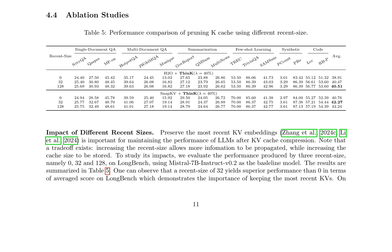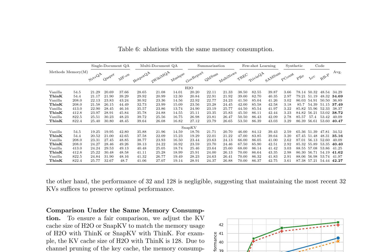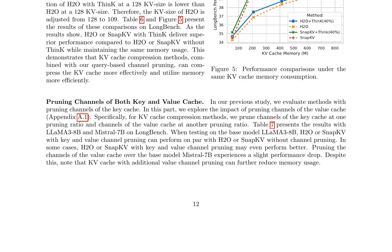The performance of THINK is compared to H2O and SnapKV under the same memory consumption. H2O or SnapKV with THINK deliver superior performance compared to H2O or SnapKV without THINK while maintaining the same memory usage, demonstrating that KV cache compression methods combined with query-based channel pruning can compress the KV cache more effectively. Furthermore, pruning channels of the value cache can perform on par with or even better than pruning channels of the key cache alone, and KV cache with additional value channel pruning can further reduce memory usage.